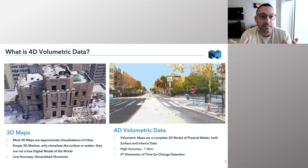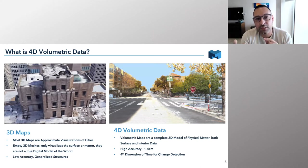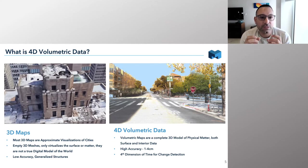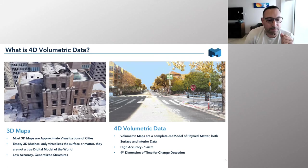We combine this with very high accuracy — one to four centimeters — and we add a fourth dimension of time. This is very important for change detection. While it's great to have a 3D environment, all of the environments around us change, and it's important we have the ability to model that as well.